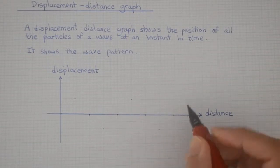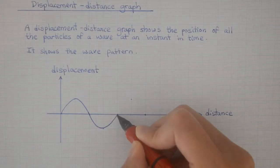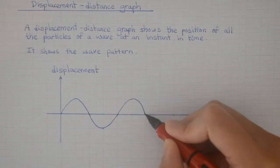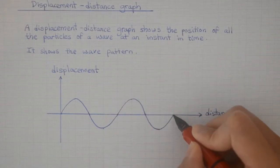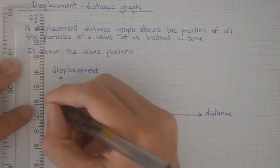What this is showing us is that at this instant in time, each particle has displaced this much from the equilibrium. The largest displacement that each particle can make from the equilibrium is called the amplitude.